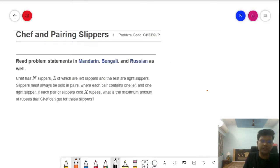Now let us try to understand the problem statement. Basically, Chef has N slippers, L of which are left slippers and the rest are right slippers. Slippers must be sold in pairs, obviously. The shoes and the slippers are sold in pairs, right? The value of an individual slipper or a shoe is basically no value, so we are going to sell that in pairs.